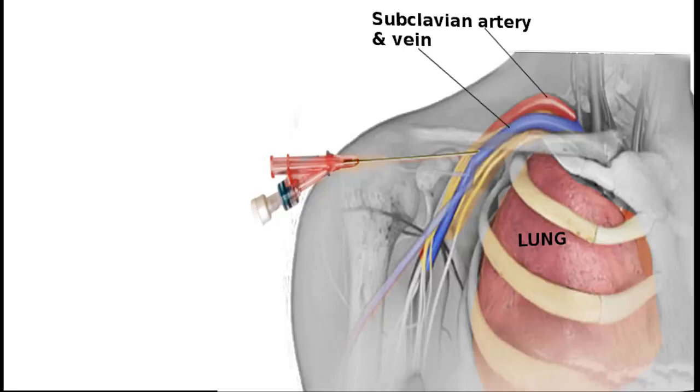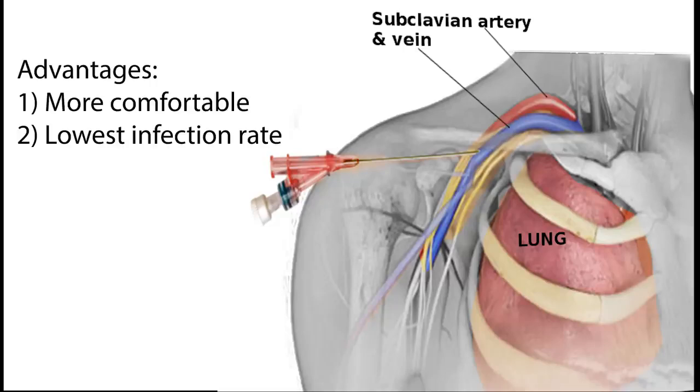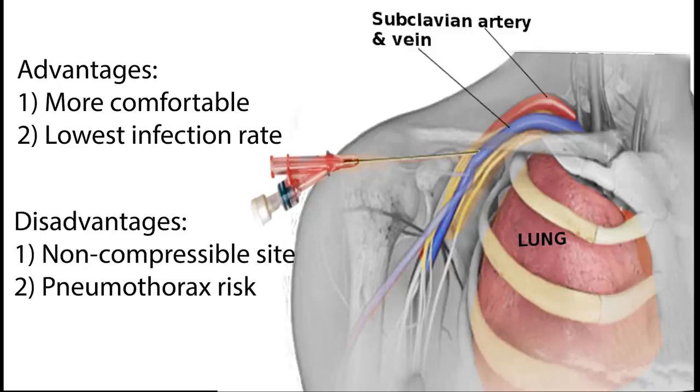Subclavian lines are also an option. The advantages of the subclavian are increased patient comfort and decreased risk of infection, but downsides are that this site is difficult to compress if you encounter bleeding and there is an increased risk of pneumothorax. Subclavian lines are sometimes obtained blind, but ultrasound is becoming much more popular. Still, the blind subclavian is very fast to put in, and in a trauma situation, if a femline is not possible, the subclavian is my next choice.